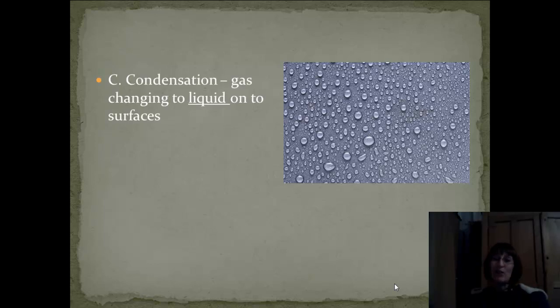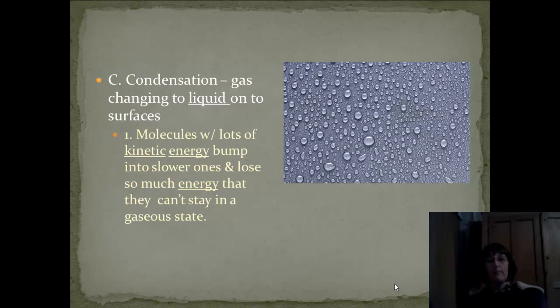Here we have a lovely picture of condensation. This is where you're going back down from the gas back down into the liquid phase. And this is when the gases bump into something like a solid, like your iced tea that you have out there. And it actually cools down so rapidly that it turns back to a liquid right on the surface of your glass. That's when we say the glass is sweating. It's because the moisture, the gas water that's in the air, hits that cold glass and loses so much energy, it changes from the gas state back down to the liquid state immediately. Molecules with lots of kinetic energy bump into slower ones, and they lose so much energy that they can't stay in the gaseous state. So we have condensation.